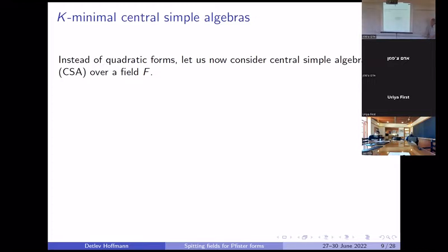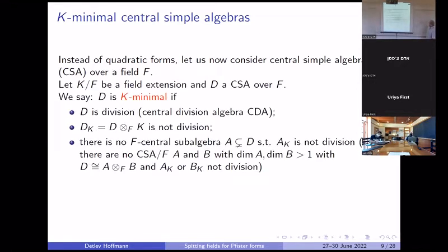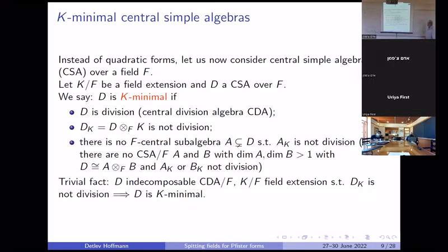Let's change the objects. Let's look at central simple algebras; you can ask the same questions. You have a central simple algebra and a field extension. Call such an algebra minimal if it's a division algebra that becomes non-division over the field extension, and it doesn't contain any central simple sub-algebra that becomes non-division. In other words, it cannot decompose into a tensor product where one of the factors becomes non-division. If you start with an indecomposable algebra and you know it becomes non-division, you have an example of something minimal because you cannot decompose it.